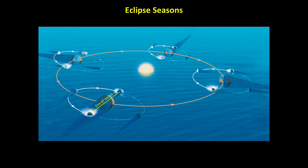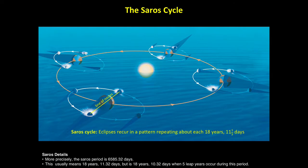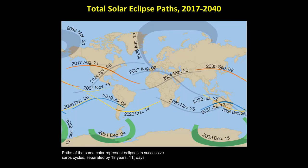This is because the nodes don't stay perfectly fixed in the moon's orbit. Instead, they move around much as shown here, but far more slowly. The combination of the 173-day period between eclipse seasons and the moon's 29.5-day cycle of phases makes eclipses recur in a pattern that repeats about every 18 years, 11 and one-third days, a time period called the Saros cycle. You can see the idea on this map, which shows the paths of totality for total solar eclipses from 2017 to 2040, with paths of the same color representing eclipses separated by the Saros period.